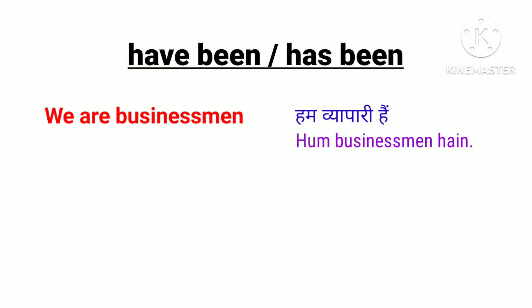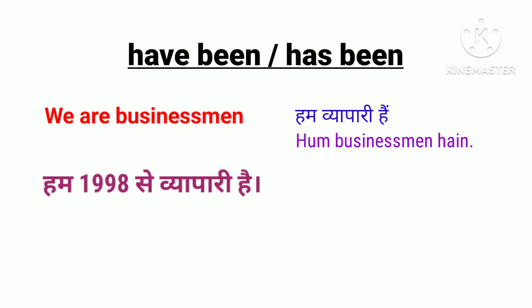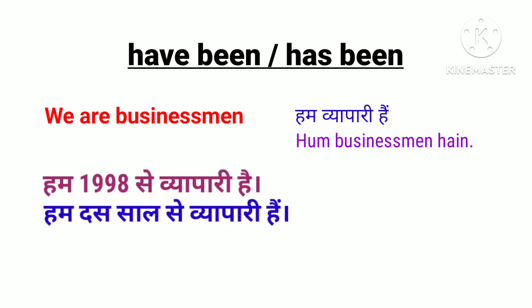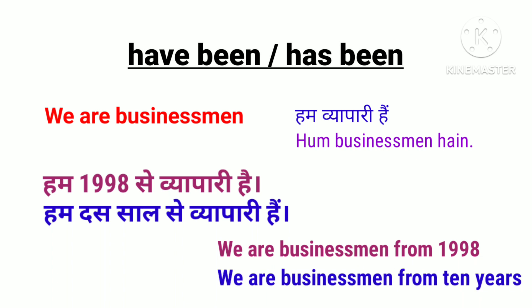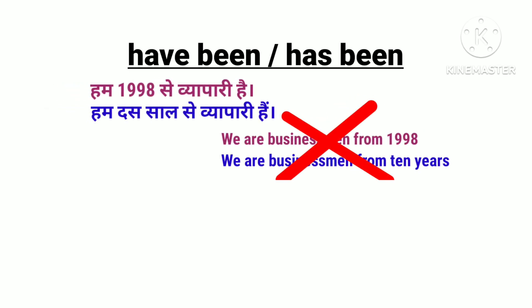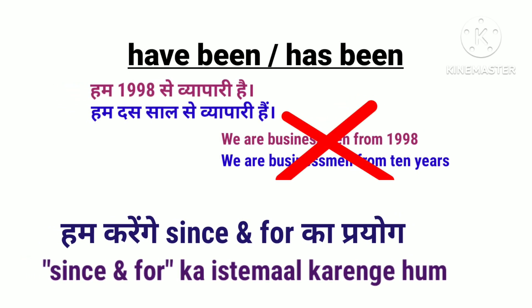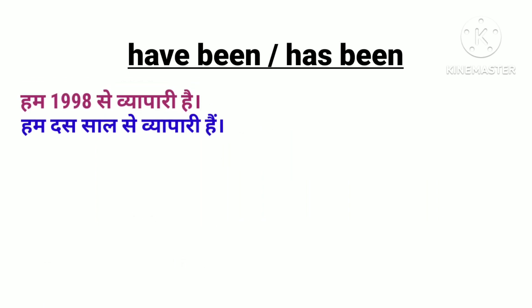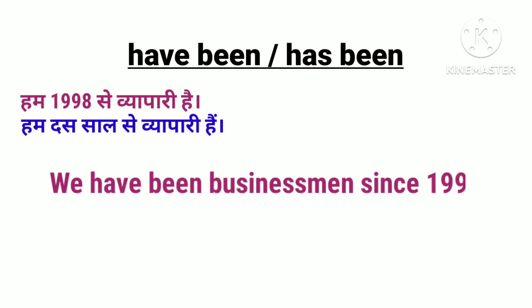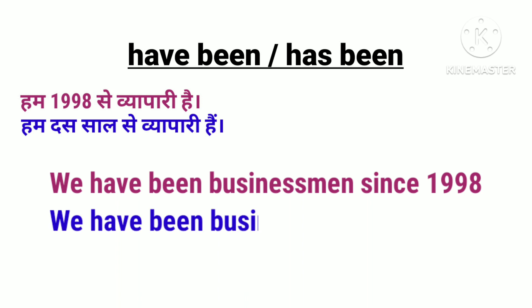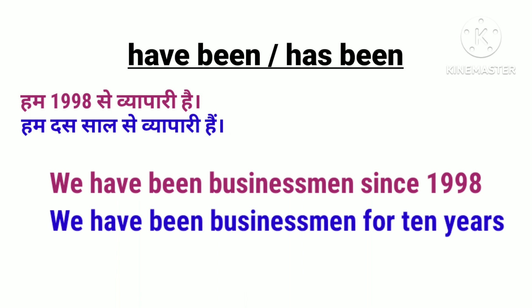For example: 'we are businessmen' — ہم بیاپاری ہیں۔ لیکن ہمیں کہنا ہے ہم 1998 سے یا 10 سال سے بیاپاری ہیں۔ 'We are businessmen from 1998' یا 'from 10 years' — یہ wrong ہوگا۔ یہاں پر since اور for کا use کریں گے have been کے ساتھ: 'We have been businessmen since 1998' or 'we have been businessmen for 10 years.'